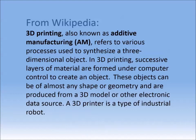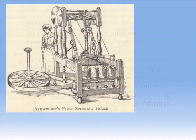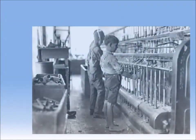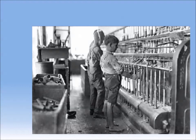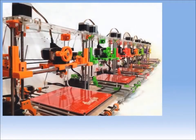A 3D printer is a type of industrial robot. Futurologists such as Jeremy Rifkin believe that 3D printing signals the beginning of the third industrial revolution, succeeding the production line assembly that dominated manufacturing starting in the late 19th century. Using the power of the internet, it may eventually be possible to send a blueprint of any product to any place in the world to be replicated by a 3D printer with elemental inks capable of being combined into any material substance of any desired form.